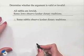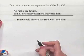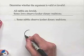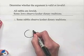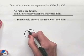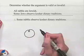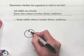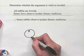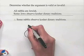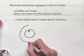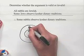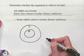We'll begin with our first premise: all rabbis are Jewish. We'll designate a circle and label it R for the set of rabbis. Since all rabbis are Jewish, we need another circle enclosing that one, and we'll label it J for Jews.